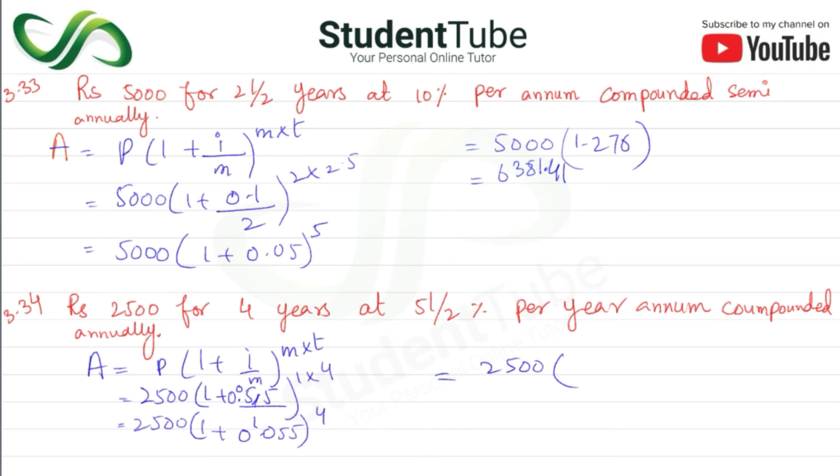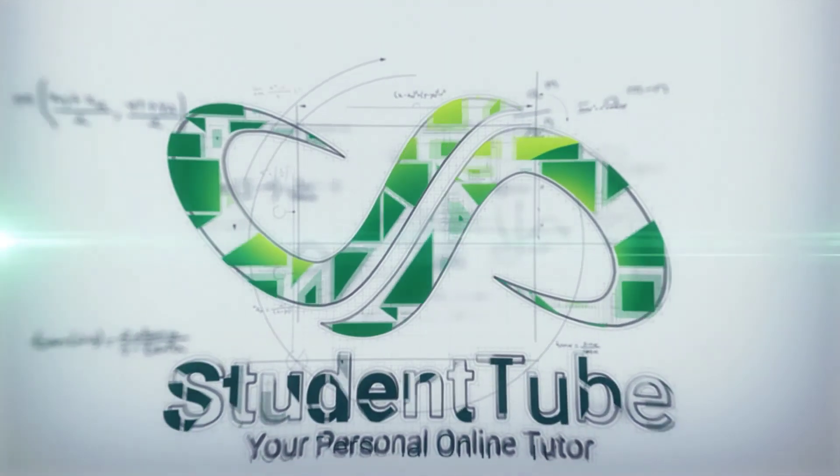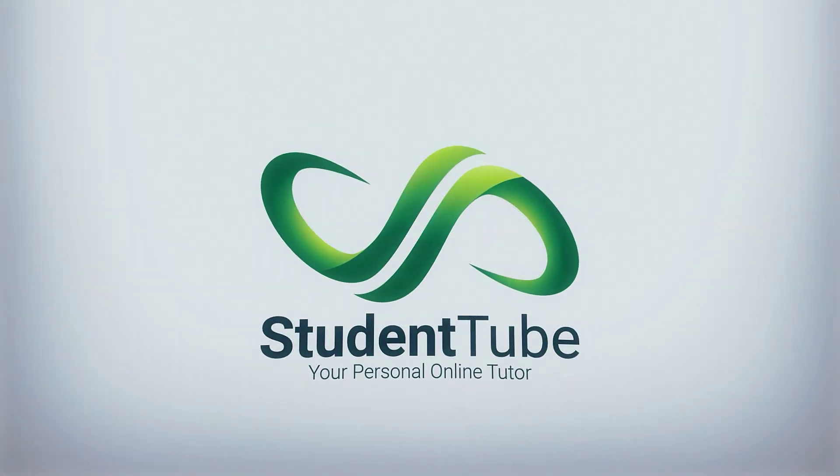When we multiply both, the answer is 3097.06. I hope the question is clear to you. For more exercises and questions, please subscribe to the channel and share with your classmates and friends. See you in the next video. Allah Hafiz.